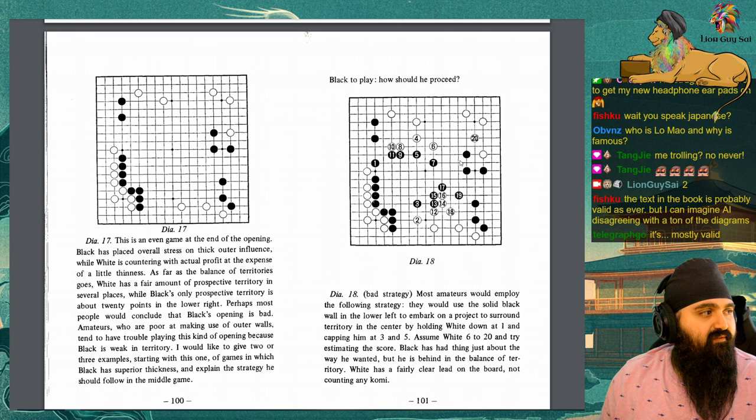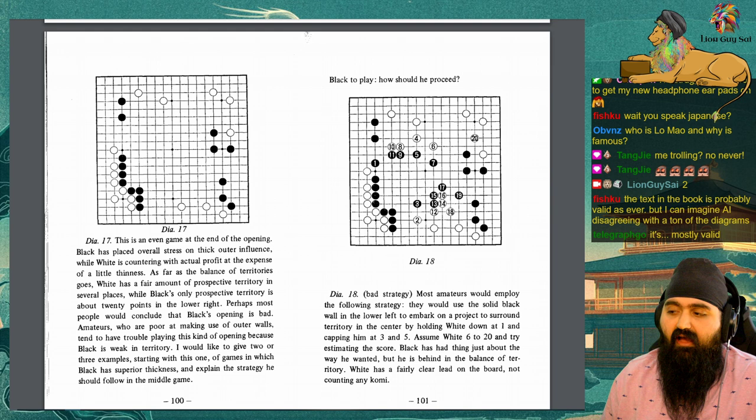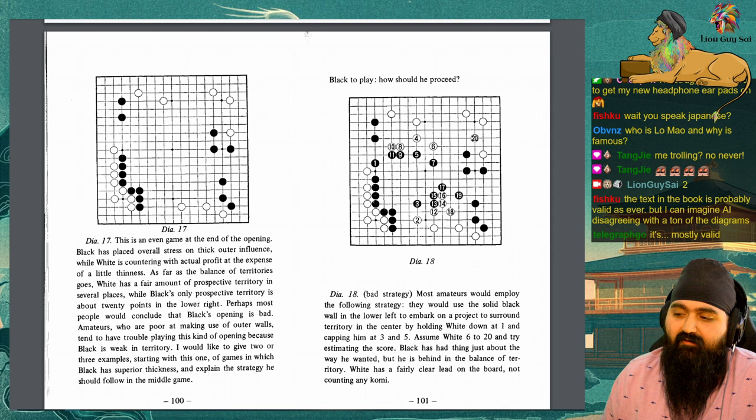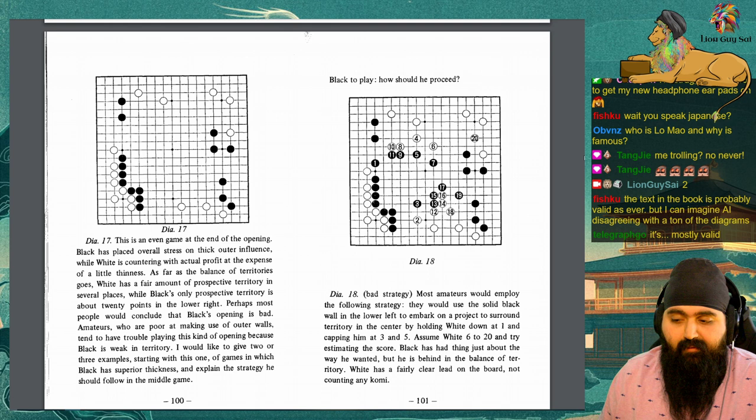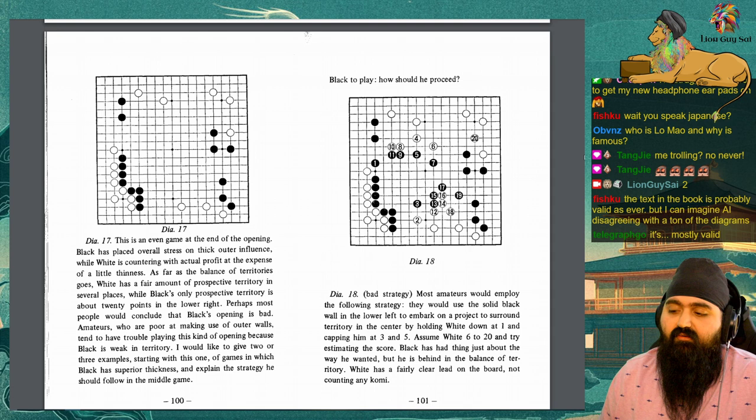Diagram 17. This is an even game at the end of the opening. Black has placed overall stress on thick outer influence, while white is countering with actual profit at the expense of a little thinness. As far as the balance of territories goes, white has a fair amount of prospective territory in several places, while black's only prospective territory is about 20 points in the lower right. Perhaps most people would conclude that black's opening is bad. Amateurs, who are poor at making use of outer walls, tend to have trouble playing this kind of opening, because black is weak in territory.